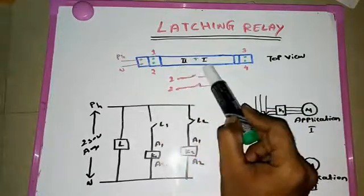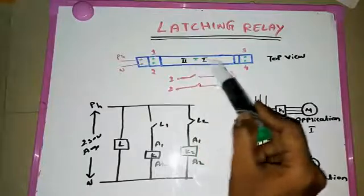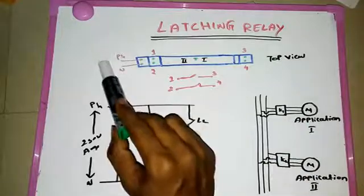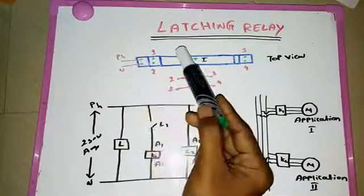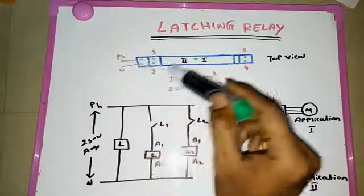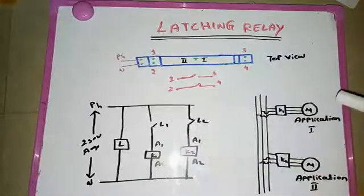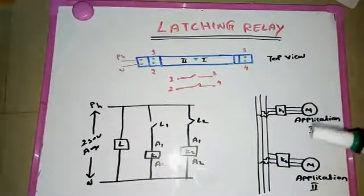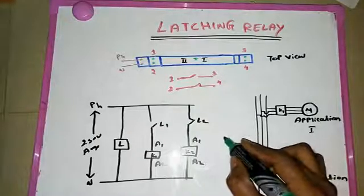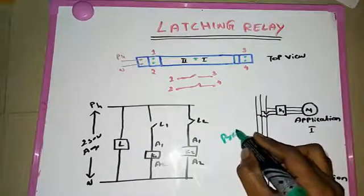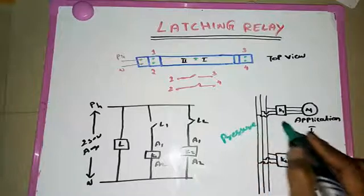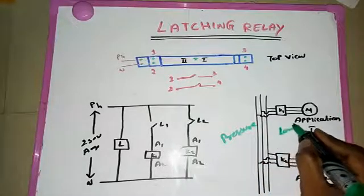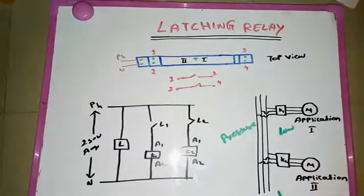This is the latching release function — when operated one by one, the first one is operated and the second one is not. Based on any message you give to the latching relay, it is going to shift things. That means, based on a pressure message, the first one is low pressure and the second one is high pressure.